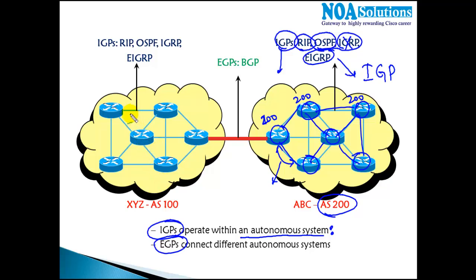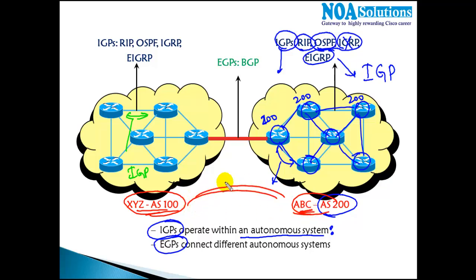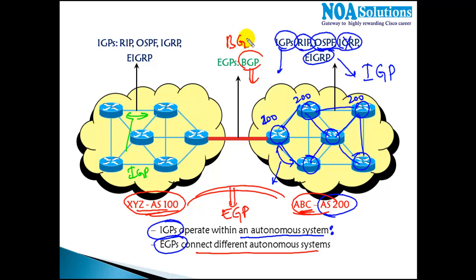If you want to communicate within the same autonomous system, you use IGP protocols. But if you want to communicate between two different AS numbers — for example, organizations ABC and XYZ wanting to talk to each other — you need an exterior gateway protocol (EGP). There is only one protocol running on the internet for inter-AS communication: BGP, which connects all the different autonomous system numbers.